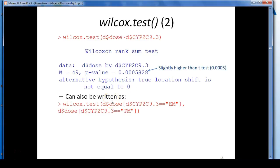An alternative way of writing it is, just as for the T-test, to provide the data for group 1 here using subsetting and selecting the individuals who are extensive metabolizers, comma, the data for the other group, in this case individuals with PM genotype, and it gives the same results.